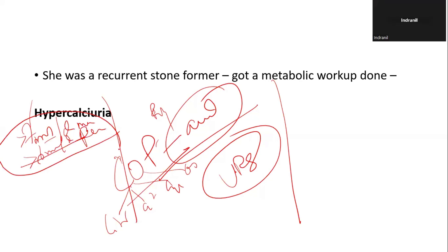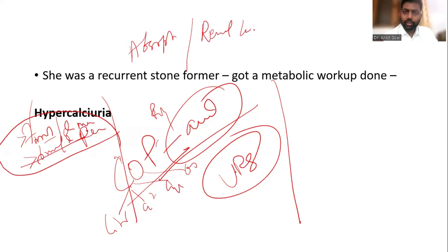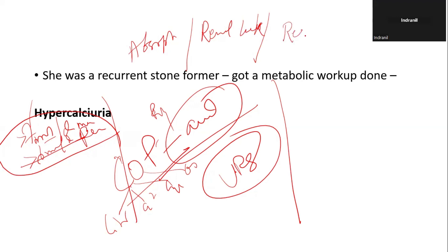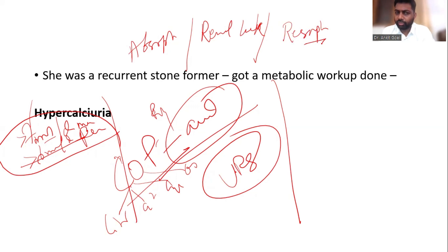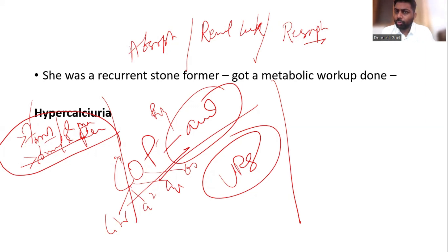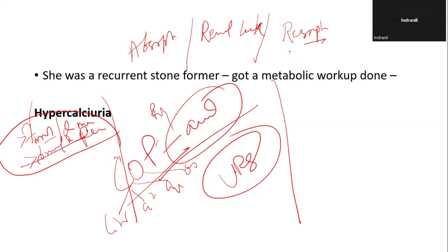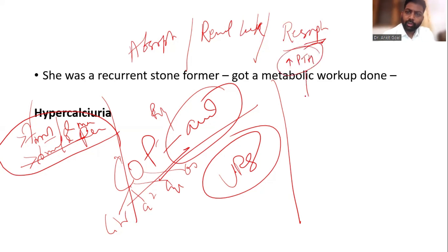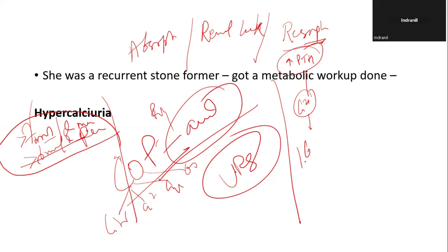There are three types of hypercalciuria: absorptive, renal leak, and resorptive. Absorptive means there is more absorption from the GIT - for example, vitamin D is elevated in pregnancy, so absorptive hypercalciuria is more common in pregnancy. In renal leak, the kidney is not able to hold calcium, so there is excess excretion from the glomerulus. In resorptive, high parathyroid hormone causes release of calcium from the bones, which then comes out in the urine.